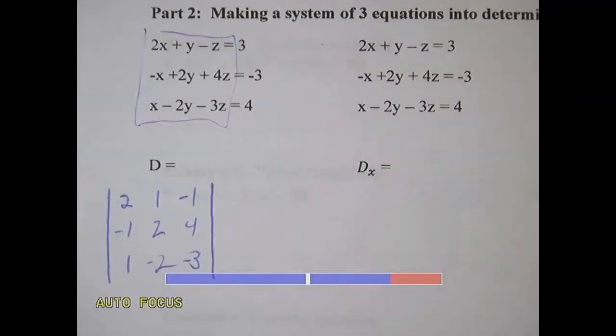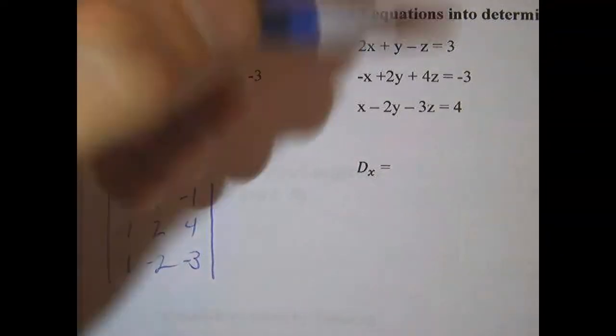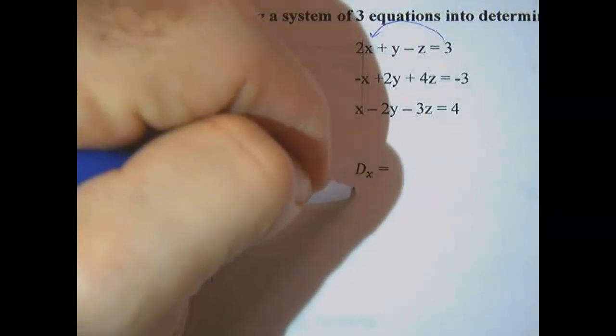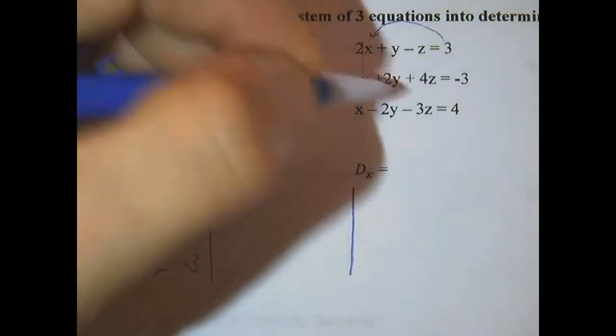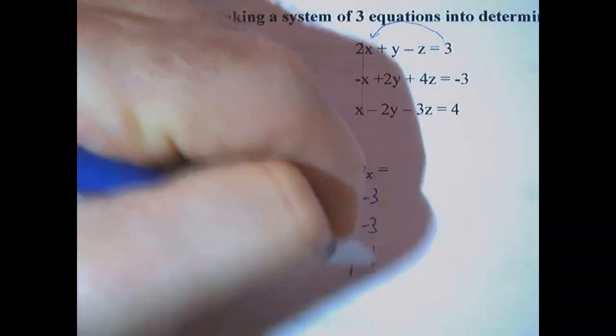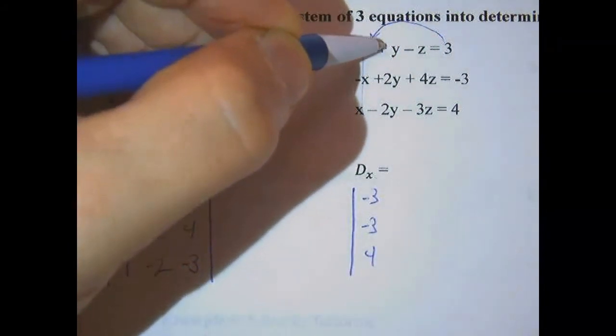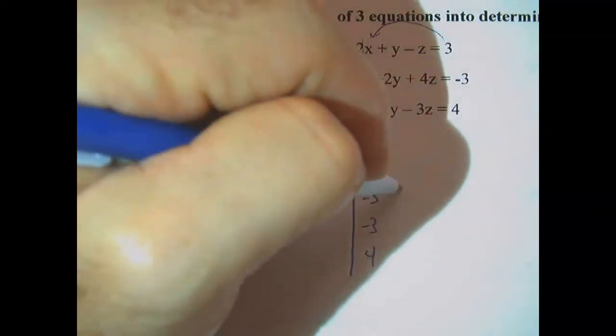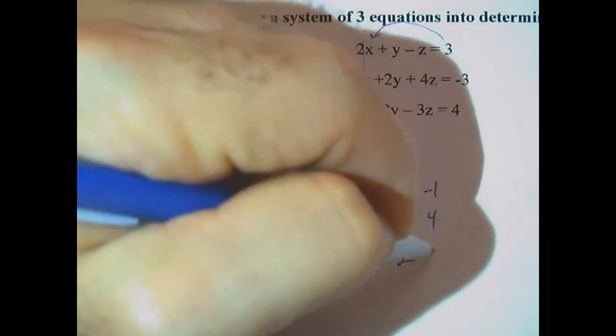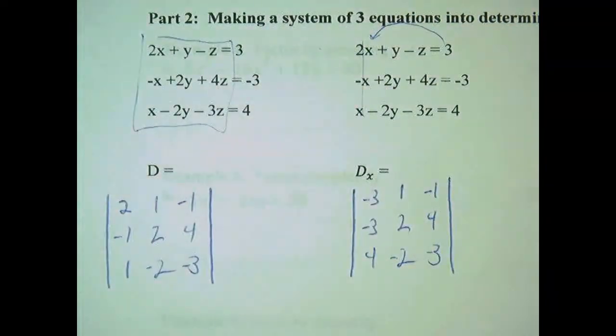This one, next one, is going to be replacing our x's with the answer column. So we're going to evaluate with this one, 3, negative 3, 4. You just have to really take your time to be careful with these so you don't make a mistake. There's a lot of steps. 1, 2, negative 2, negative 1, 4, negative 3. That's our Dx.